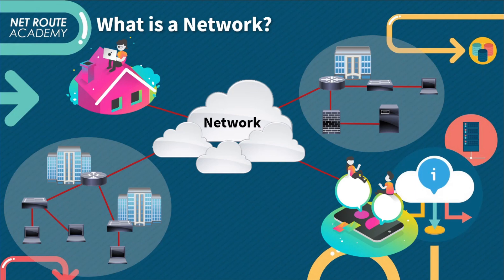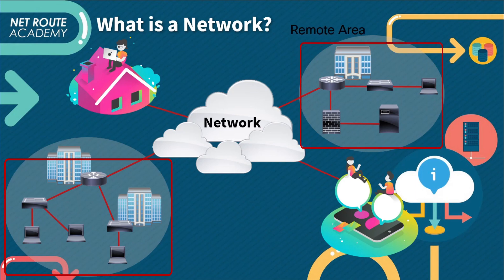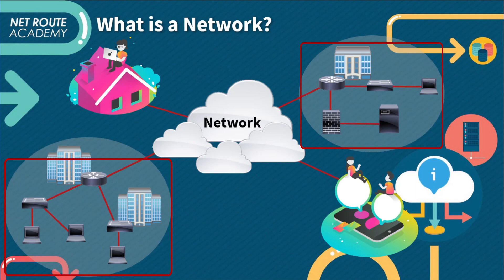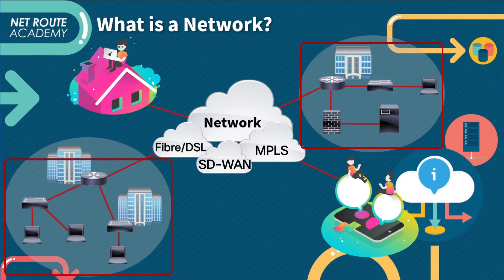A LAN could consist of only two computers in a home office or small business, or it could include hundreds of computers in a large corporate office or multiple buildings. For example, we have an HQ here and a remote local area network here. We're going to need a WAN, or wide area network, to be able to bridge those remote offices to the headquarters office.